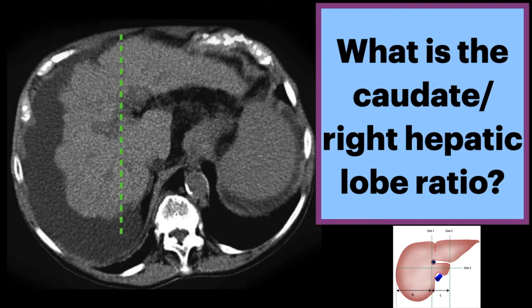Our first line is drawn through the right lateral border of the portal vein. Our second line is drawn through the left lateral border of the caudate lobe. Line number three is orthogonal to lines one and two, midway between the portal vein and the IVC extending to the right liver edge.